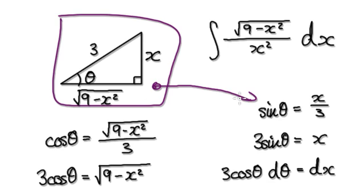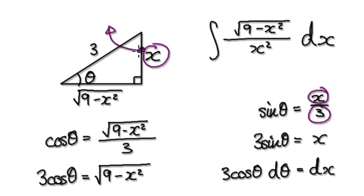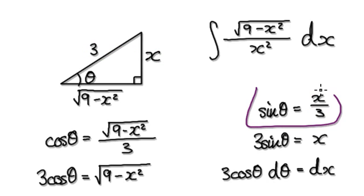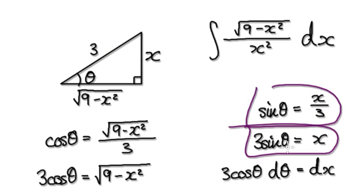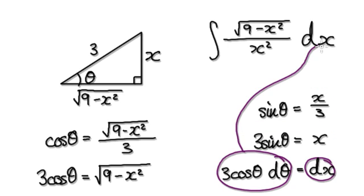Once you've got your triangle, you can jump to here. Sine equals opposite over hypotenuse. Now make x the subject — so x equals this expression. Differentiate it, so dx equals this expression. Later on, we can put it into the integral.